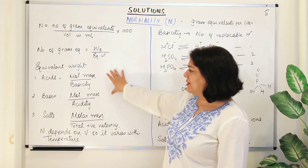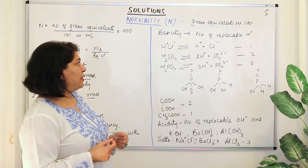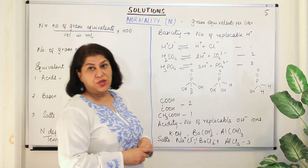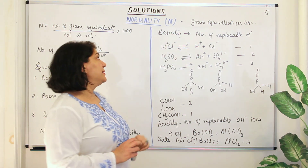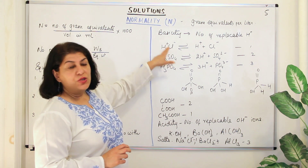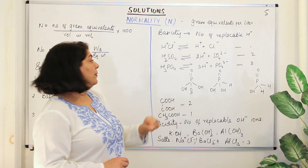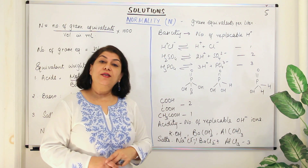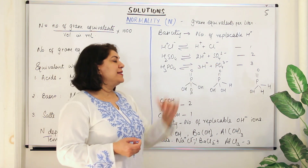Let's look at some examples of basicity. HCl has one replaceable H⁺ ion, so its basicity is one. H2SO4 has two replaceable hydrogen ions, so its basicity is two. H3PO4 has three replaceable hydrogen ions, so its basicity is three. But with the phosphate-related acids H3PO3 and H3PO2, even though the formulas suggest three hydrogens, the basicity is not always three.